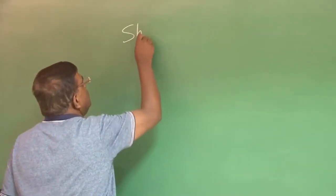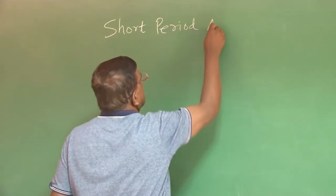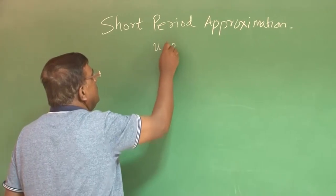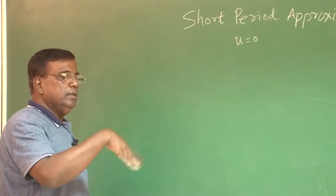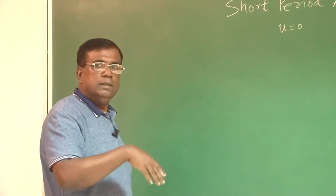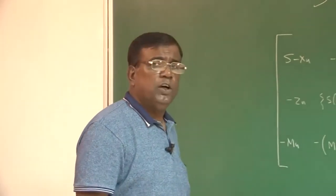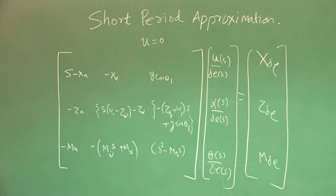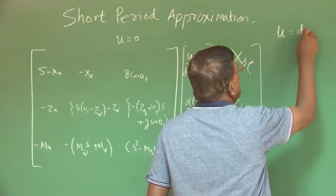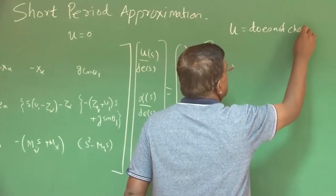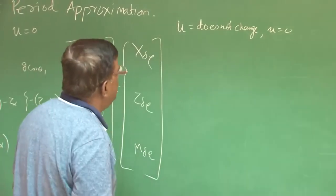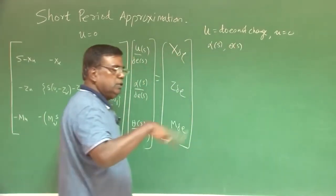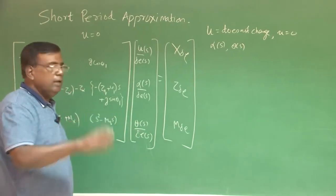For the short period approximation, since perturbed u = 0, the dynamics are governed by theta and alpha. We retain the equations for alpha(s) and theta(s) only. The simplified matrix equation becomes: [s − Zα, −(U₁s − Mα̇·s); −Mα̇·s, s² − Mq·s] × [α(s); θ(s)] = [Zδe; Mδe]·δe, assuming Zα̇ = Zq = θ₁ = Mt_α = 0.